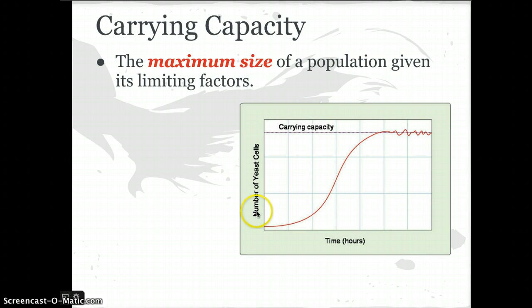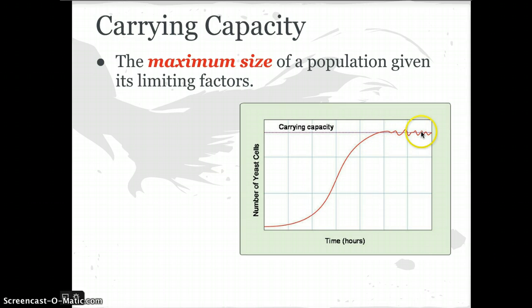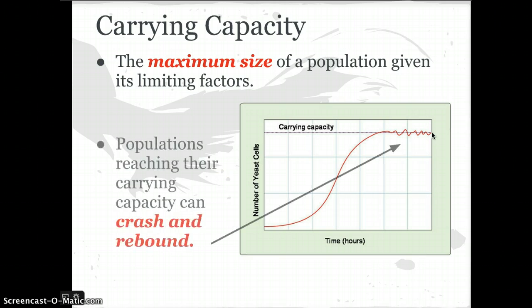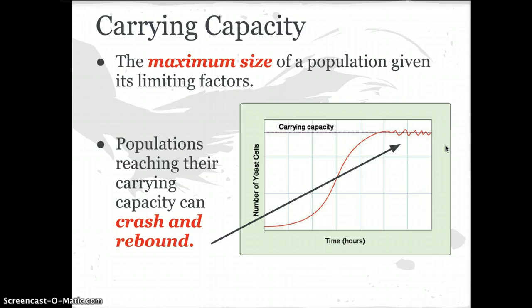Here we have yeast cells in a culture dish. They're going to grow really rapidly until they reach some limiting factor or the limit their environment can support, and then they'll reach carrying capacity. Often when a population reaches carrying capacity, most populations don't see it coming — they overshoot and experience a crash and rebound, crash and rebound, as their numbers adjust to what the environment can support. Rabbits will produce many babies, deplete their grass resources, then rebound as those resources recover.